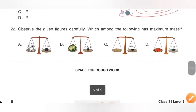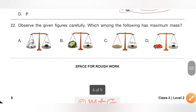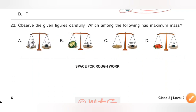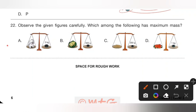Question 22: Observe the given figures carefully. Which among the following has maximum mass? Mass tells us how heavy or light an object is. Among the given options, the puppy weighs the maximum and thus has maximum mass. Option A, puppy, is the correct answer.